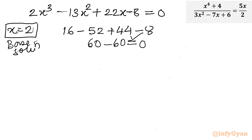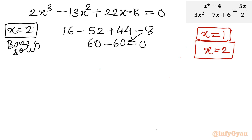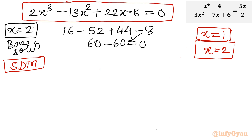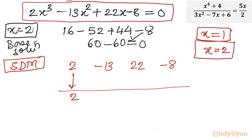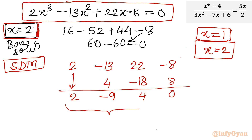Up to this point we have found 2 solutions: x equals 1 and x equals 2. Now using Synthetic Division on the cubic with base solution 2: coefficients are 2, minus 13, 22, minus 8. Leading coefficient 2 unchanged; 2 times 2 is 4; minus 13 plus 4 is minus 9; minus 9 times 2 is minus 18; 22 minus 18 is 4; 4 times 2 is 8; minus 8 plus 8 is 0. The resulting quadratic equation is 2x square minus 9x plus 4 equal to 0.